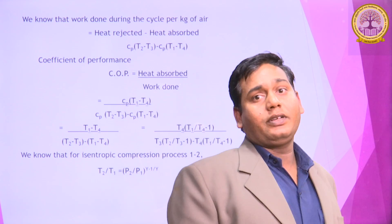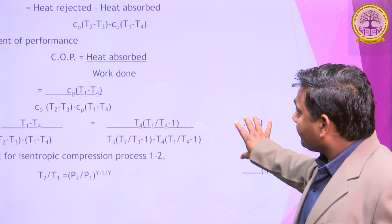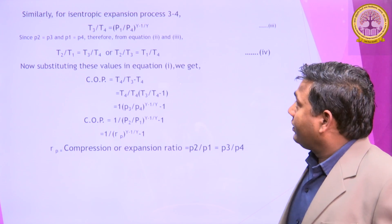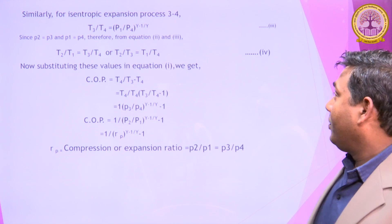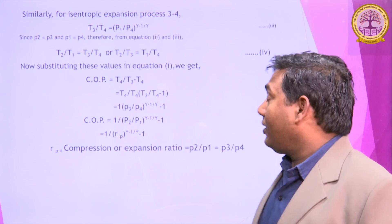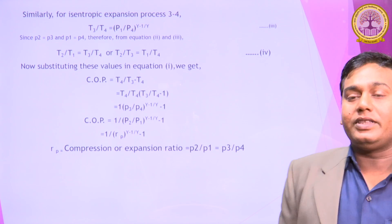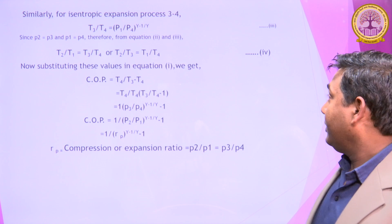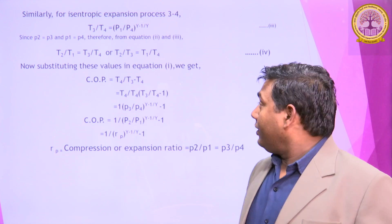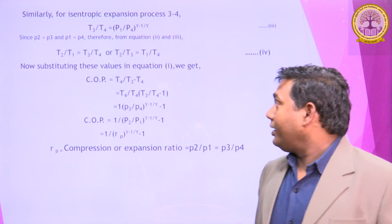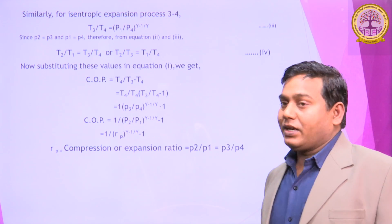We know that T2 by T1 equals (P2 by P1) to the power (gamma minus 1) over gamma. This is the isentropic compression process. Similarly, T3 by T4 equals (P3 by P4) to the power (gamma minus 1) over gamma. And P2 equals P3 in the P-V diagram. We thus get the equation T2 by T1 equals T3 by T4. Substituting these values into the Coefficient of Performance equation,